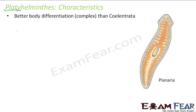They have got even better body differentiation as compared to Cnidaria. As we are moving ahead, you see the complexity is increasing. We started with Porifera which was at a cellular level of organization. Then we came up with Cnidaria which was at a tissue level of organization. Now we have Platyhelminths which is even more complex than Cnidaria.